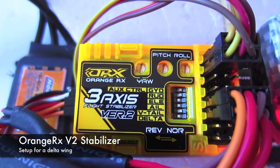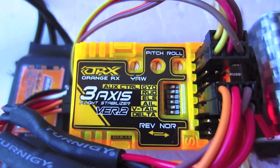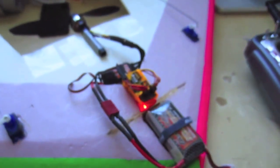Alright guys, I just got this new Orange RX flight stabilizer, this is version 2, which can be used on a delta wing, and I just set it up on this small wing, just my little pusher delta.